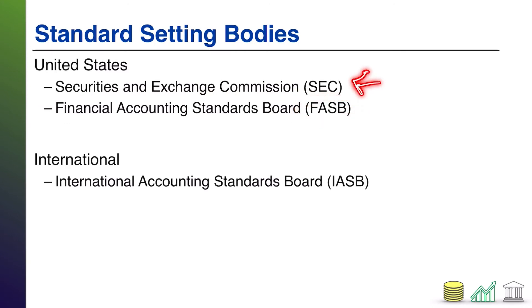The Securities and Exchange Commission regulates capital markets in the United States. They also have the legal authority to set accounting standards. However, they also have the authority to delegate the setting of those standards to another body — and that's where the FASB, the Financial Accounting Standards Board, comes in. The SEC has delegated financial accounting standard-setting to this standards board.